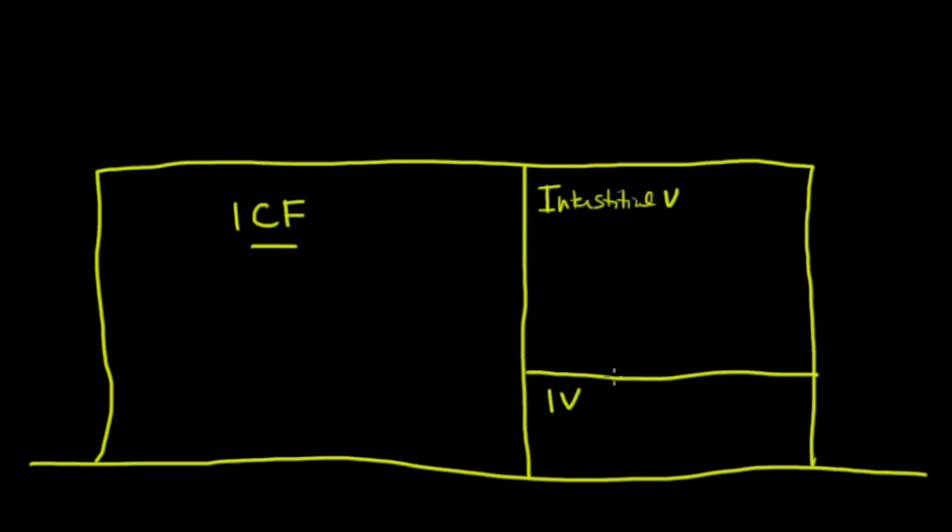This intravascular volume is separated from the interstitial volume by the capillary wall. The capillary wall is not a barrier to the movement of electrolytes and fluid. I'll represent that by drawing little openings. So basically, sodium and water can go back and forth between these two. This is effectively one compartment for electrolytes and fluid. In other words, this wall does not separate their movement. On the other hand, the wall that separates the extracellular fluid from the intracellular fluid is a pretty tight barrier. This is basically the membrane of the cell.